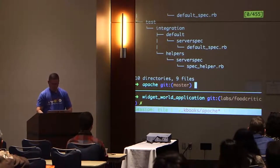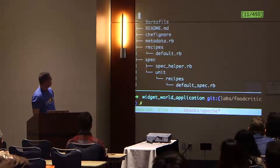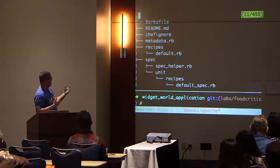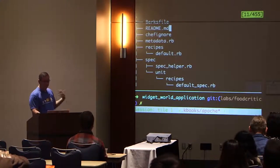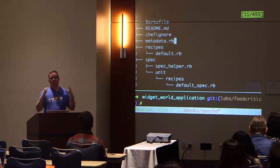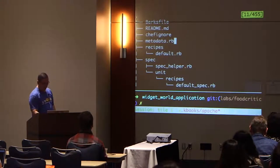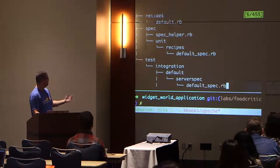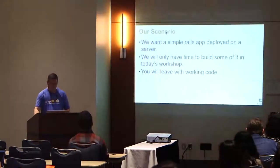Let me CD into the cookbooks/Apache directory and show you what's here. There are a bunch of files and directories. A cookbook is essentially a known structure on your file system with some default files and directories we care about. There's a readme — you should write what you're going to do in your readme. It has a metadata where we store version numbers. There's a directory for recipes, a directory for spec tests, a directory for tests, and some other stuff.